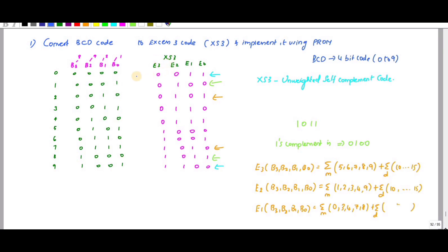To convert BCD to XS3, we know BCD ranges from 0 to 9. For 0 it is all zeros; for 1, B0 is 1; for 2, B1 is 1; for 3, B1 plus B0 is 3; for 4, B2 is 4; for 5, B2 plus B0; for 6, B2 plus B1; for 7, B2 plus B1 plus B0; for 8, B3; and for 9, B3 plus B0.